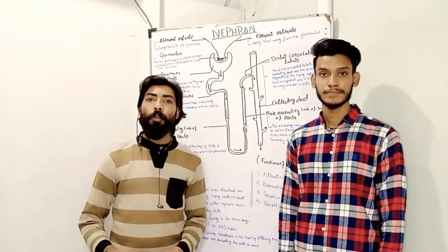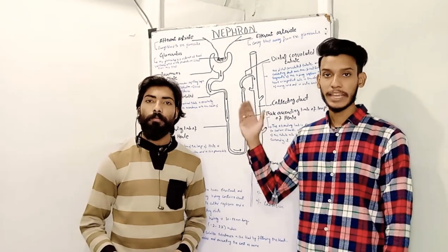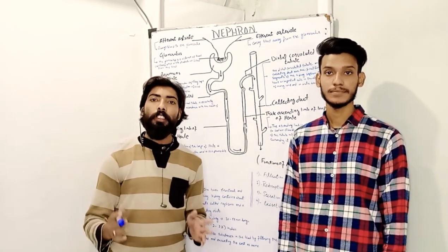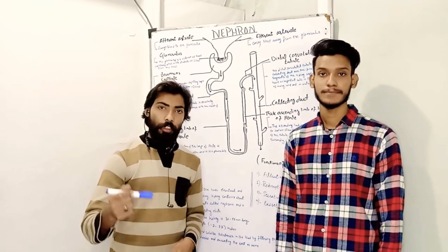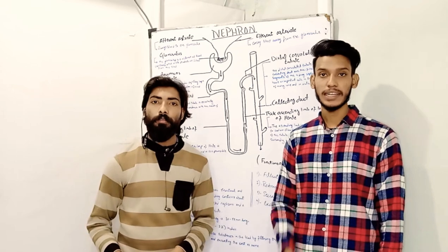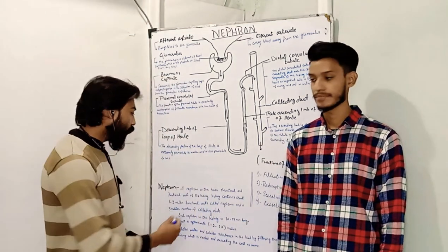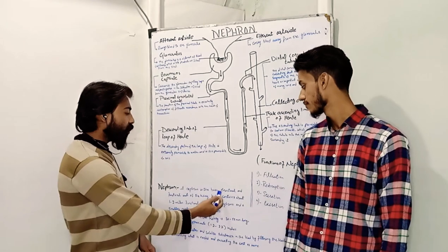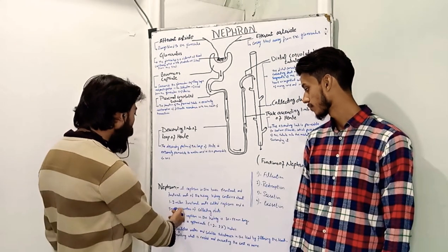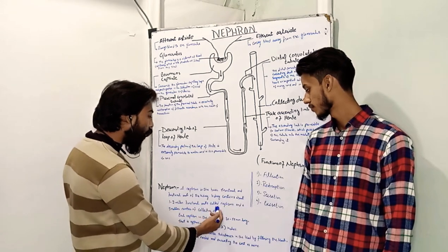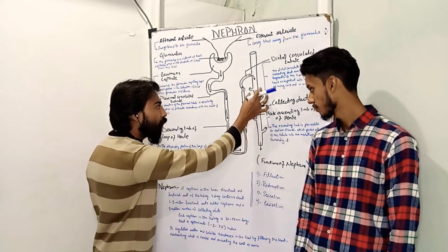Today we are going to teach you about nephrons. Our question is: what is a nephron? A nephron is a basic structural and functional unit of a kidney. The kidney contains about 1 to 2 million functional units called nephrons, and a smaller number of collecting ducts.